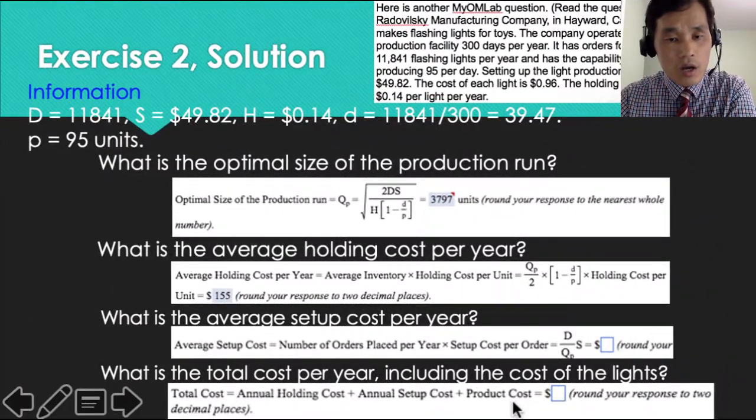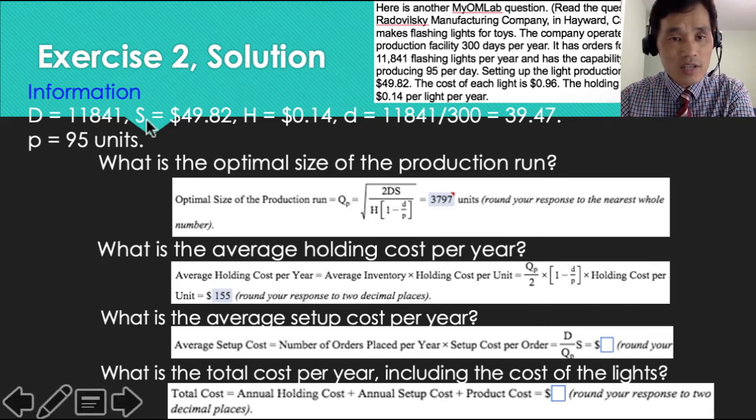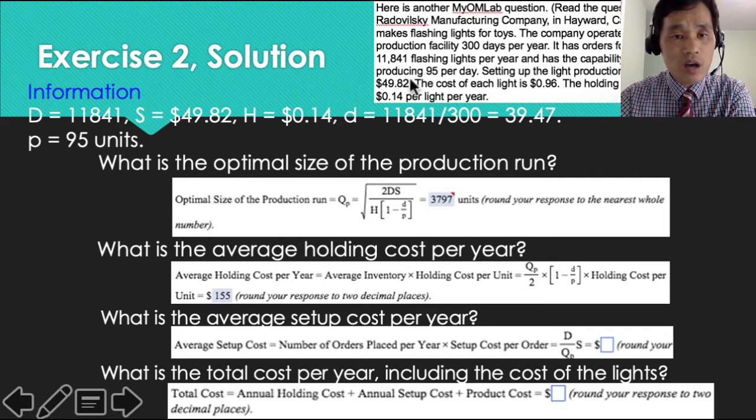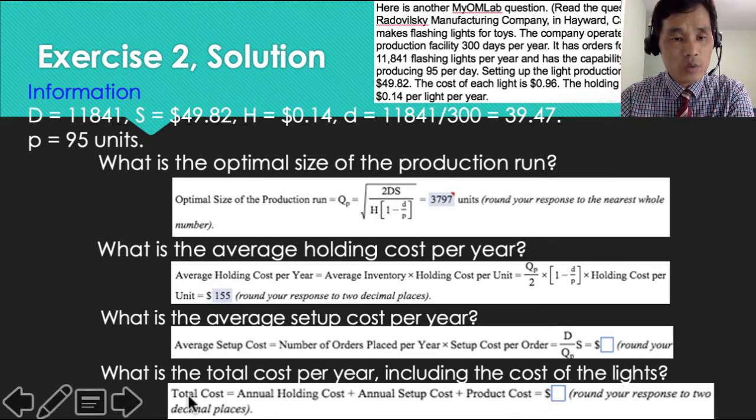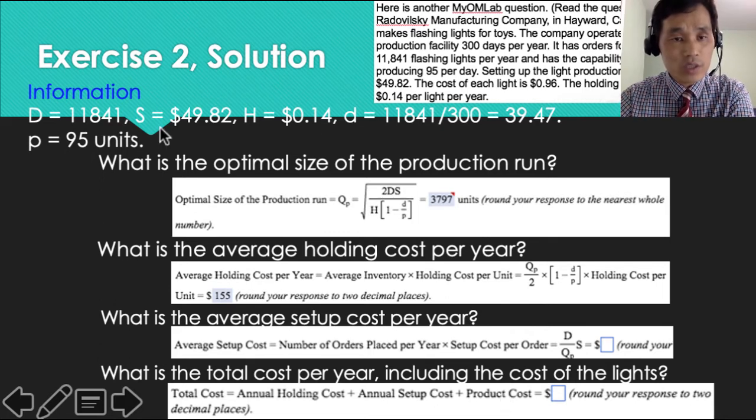The product cost will be the annual demand times the product cost. We know the annual demand is 11,841. The product cost is 49.82, so we have to multiply them and add them. Then we have total costs: annual holding cost, which is 155, annual setup costs 155, and product cost will be 11,841 times 49.82. That will be the answer.